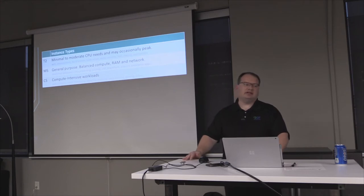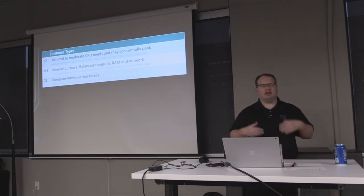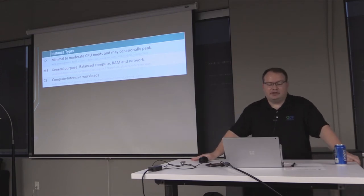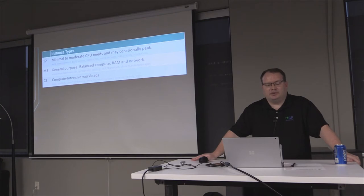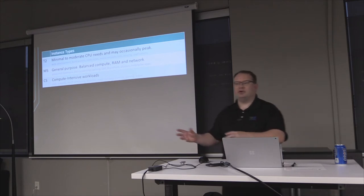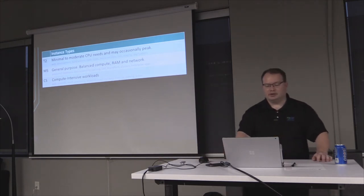The M5s are more or less what you'd get as a general-purpose server — if you say 'I need a server,' Dell ships you one: that's your M5. You also have C5s, which are the compute instances — they have a beefier CPU and are tuned for processing power. You don't get as much memory compared to the M5, because you're optimizing for CPU rather than memory or network.